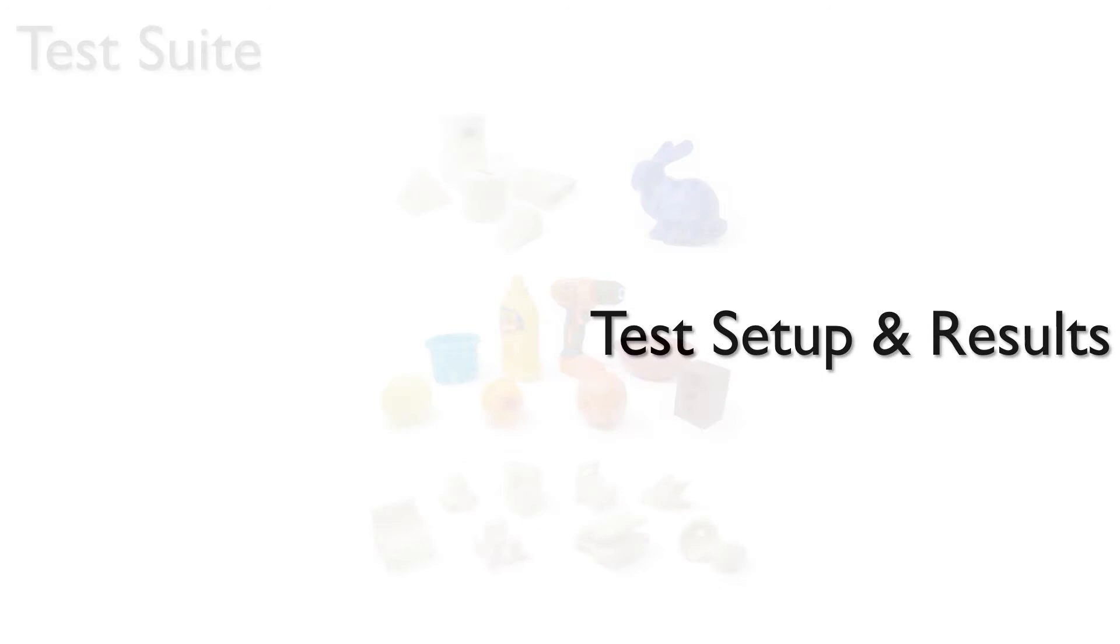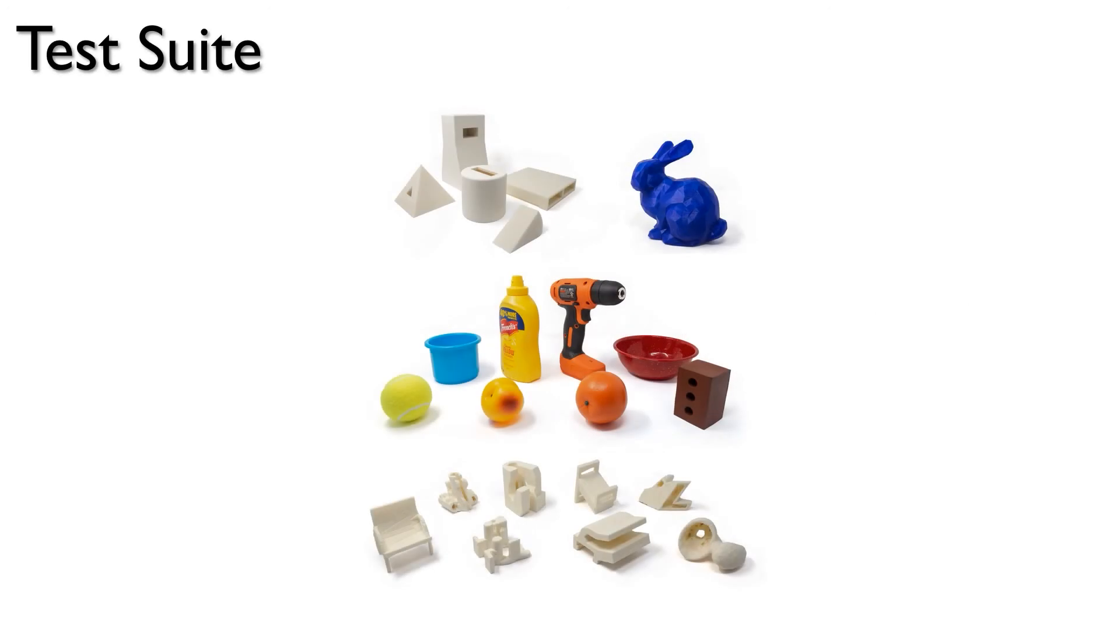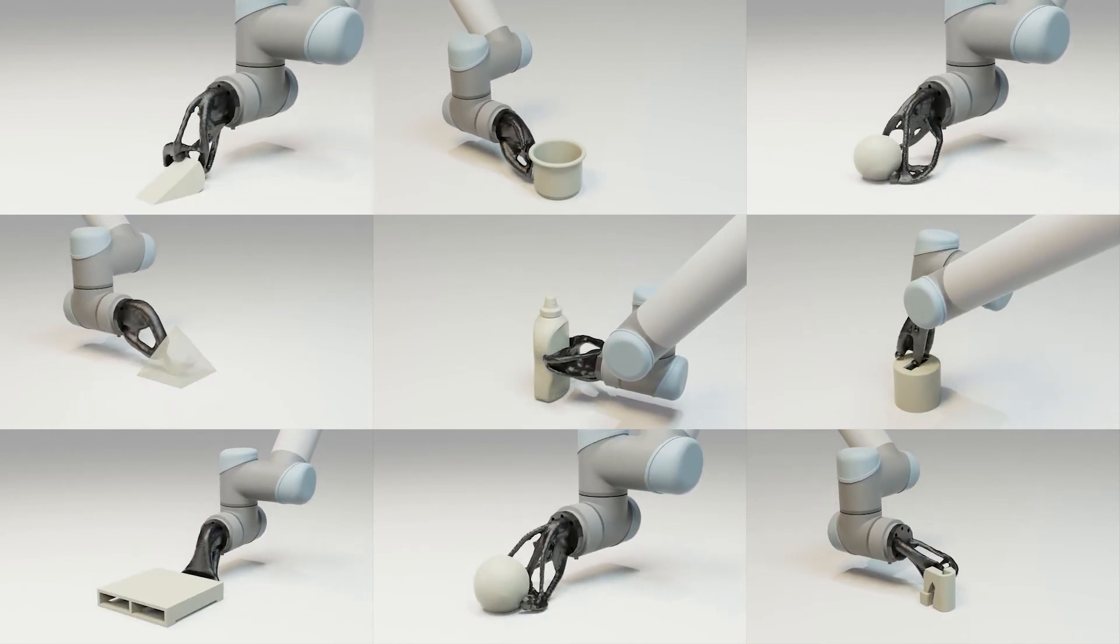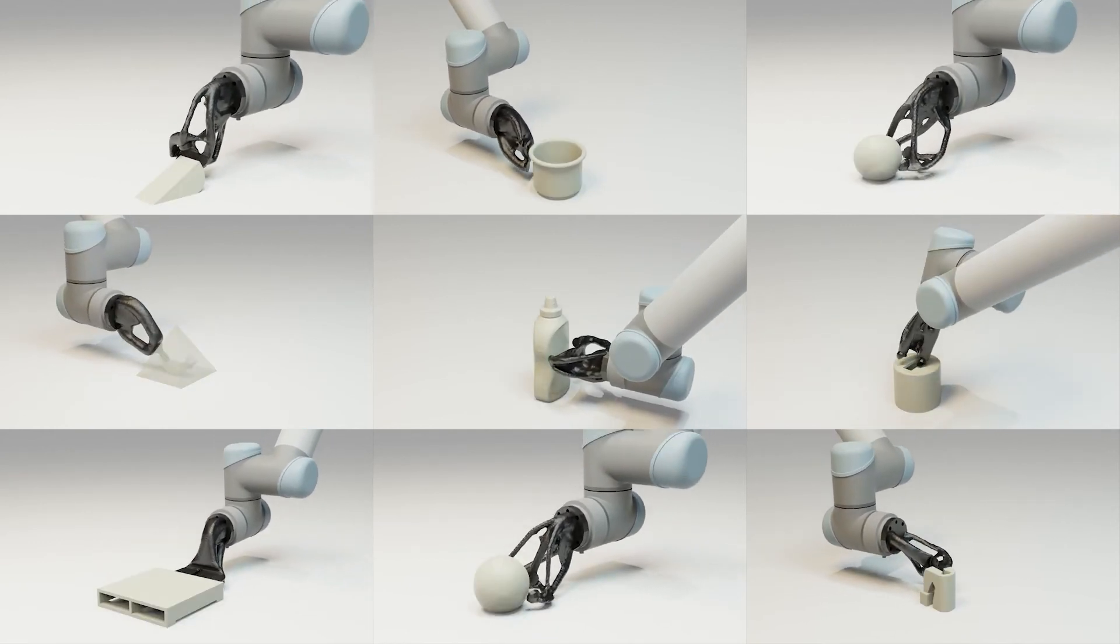We evaluated our algorithm on our own test suite of 23 objects, including objects that have internal structures, objects that cannot be picked up by antipodal grippers, the bunny from a subset of the well-known grasping dataset, and a set of challenging objects. Our algorithm found a solution to each of the 23 objects in our test suite and took less than 3 hours on average per object.